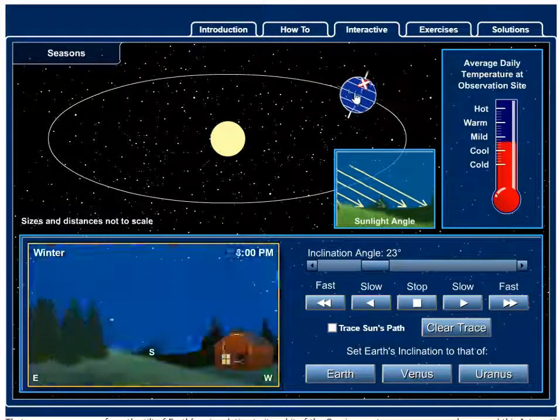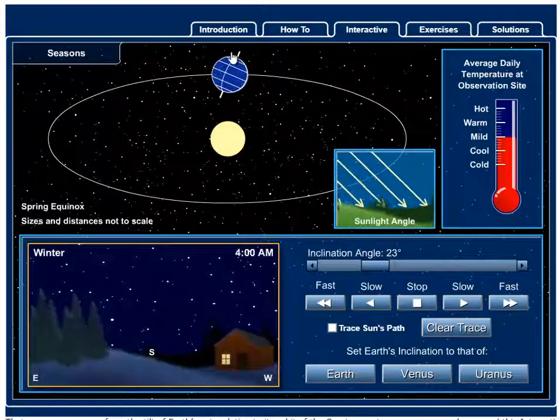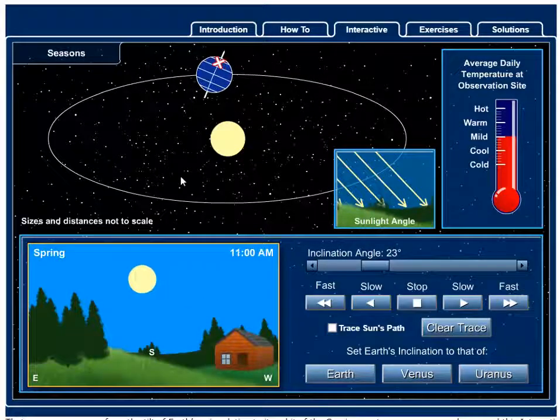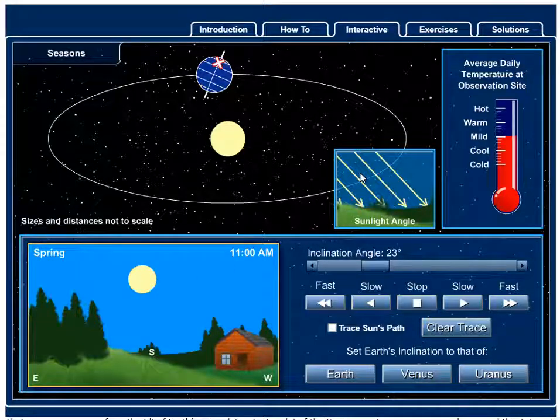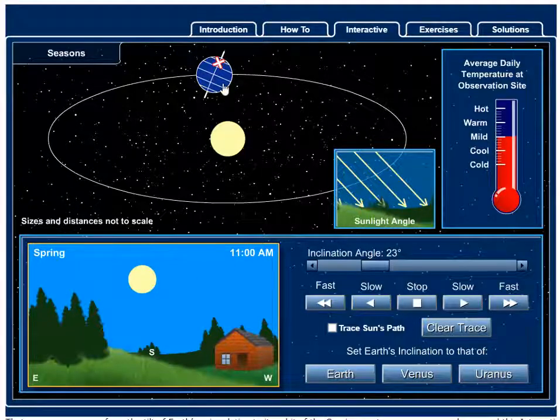I'm going to drag Earth and move it until we hit spring. So notice how much higher the Sun is in the sky. The sunlight angle is getting a little more upright or direct. The temperature is warming up as well.